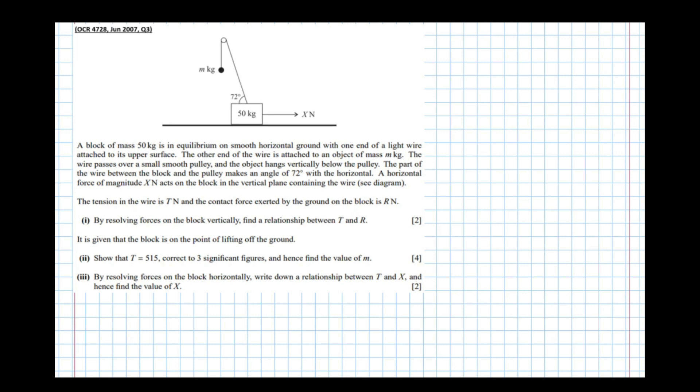The part of the wire between the block and the pulley makes an angle of 72 degrees, with a horizontal force of magnitude x newtons acts on the block in the vertical plane containing the wire. So basically all that text there just describes the diagram, and usually you'll find that's the case. Sometimes seemingly complicated words are better described by just looking at the diagram.